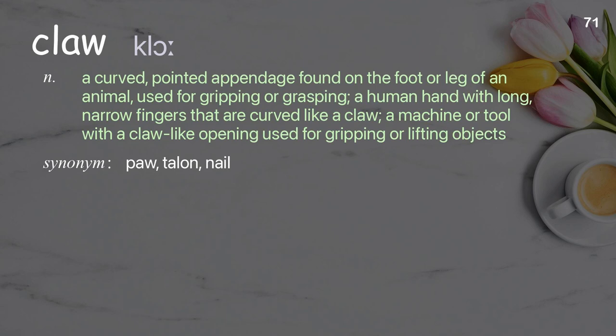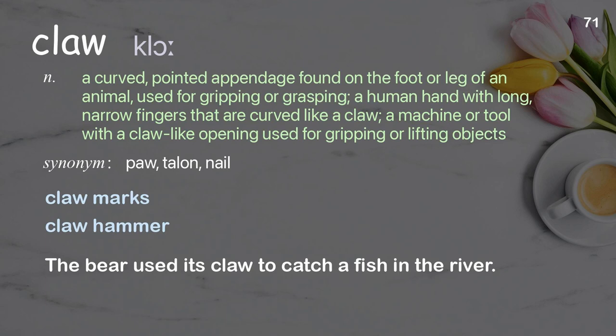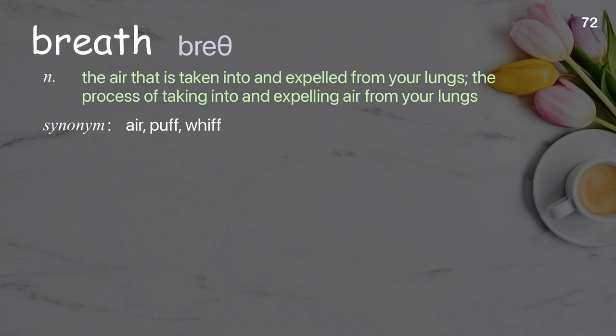Claw: A curved, pointed appendage found on the foot or leg of an animal, used for gripping or grasping; a human hand with long, narrow fingers that are curved like a claw; a machine or tool with a claw-like opening used for gripping or lifting objects. The bear used its claw to catch a fish in the river.